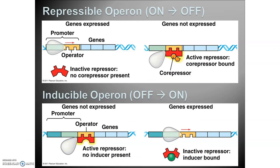There are two types of operons: repressible or inducible. If they're repressible, they're usually on, but you can turn them off. If they're inducible, they're normally off, but you can do something to turn them on. There's a promoter region where transcription usually occurs, and an operator region — in bacteria, the operator is where the repressor binds. So the operator is a binding site for a repressor.